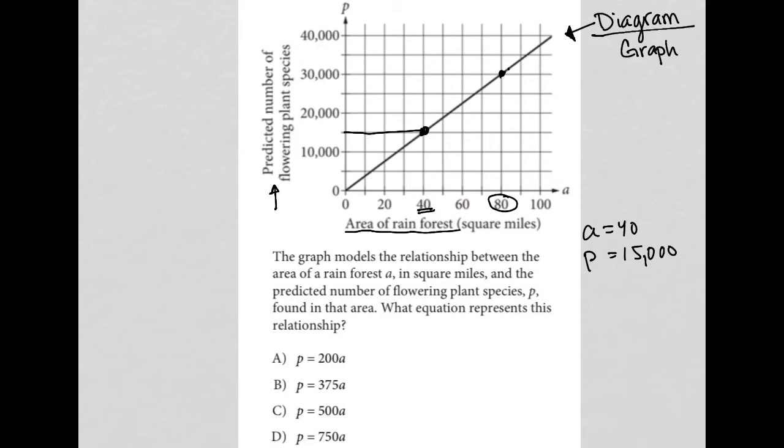So when I test answer choice A, that would mean 15,000 should equal 200 times 40.